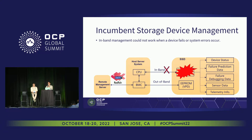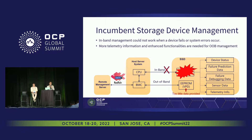But what if the processing unit inside the device fails? In this case we cannot reach any data such as device status, telemetry information, and sensor data — the in-band path will not be available anymore. We could leverage the out-of-band path, but EEPROM is small and only a little data is hosted there, so we can retrieve almost nothing of significance from EEPROM.